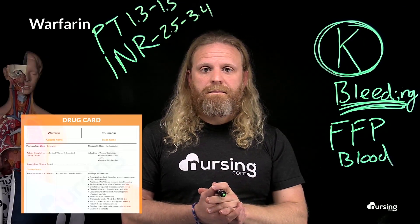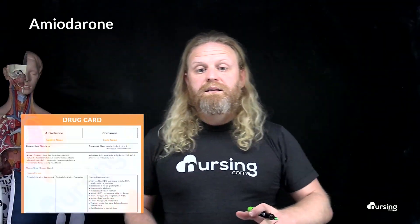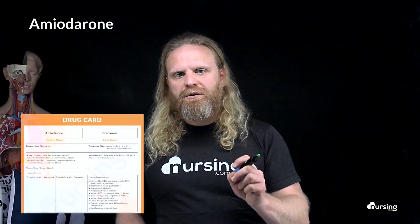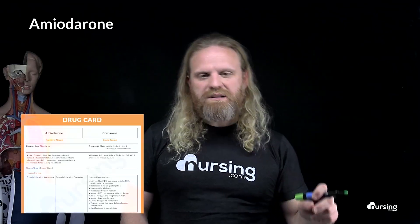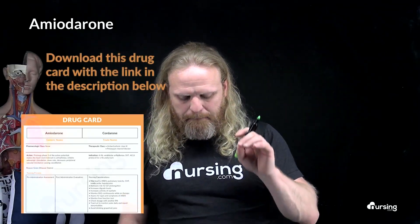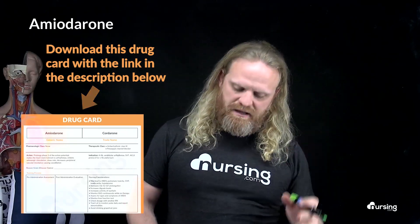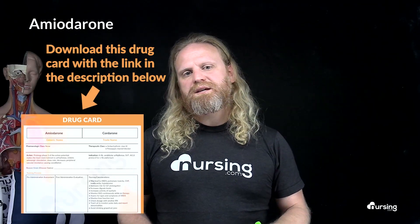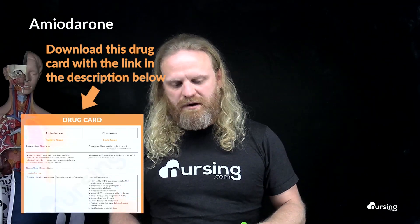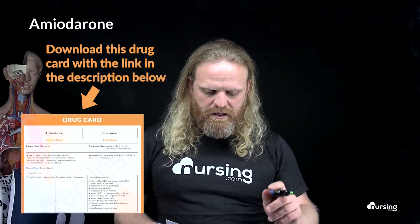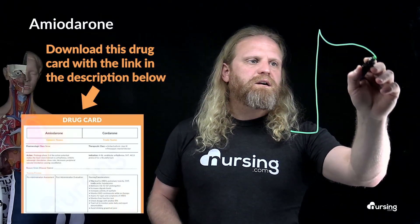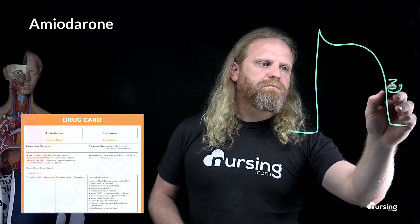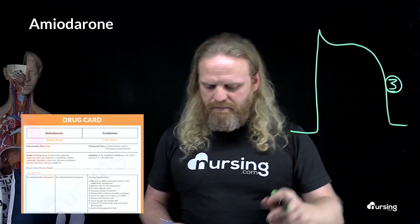The next medication is amiodarone. Amiodarone is a class 3 antiarrhythmic as well as a potassium channel blocker, meaning it binds to and blocks potassium channels, which prolongs repolarization of cell membranes.